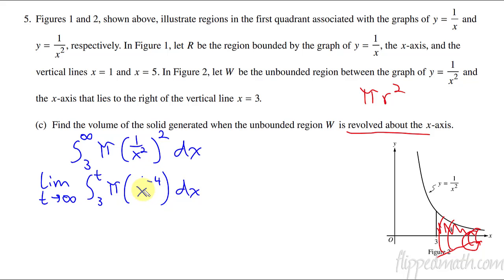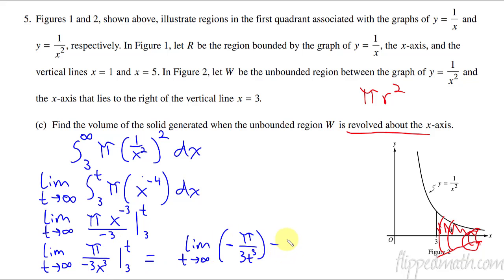Now we can integrate. I'm going to leave the limit part. Nothing's changing there. Then this becomes pi x to the negative three over negative three evaluated from three to t. Before I start plugging numbers in, let me just see what that looks like simplified. There we go. Pi over negative three x cubed. Plug the t in. I still have the limit. I'm going to have the limit as t approaches infinity. I am plugging the t in first. Then I subtract the same thing with a three plugged in. So a negative pi over three times three cubed, because that three got plugged in.